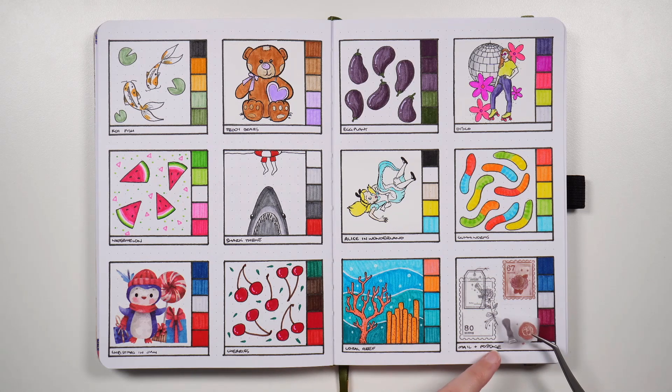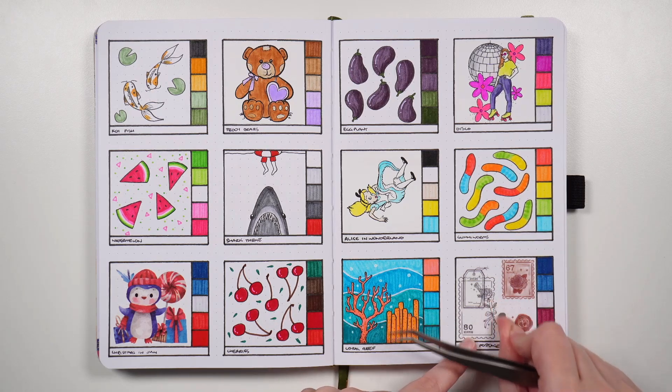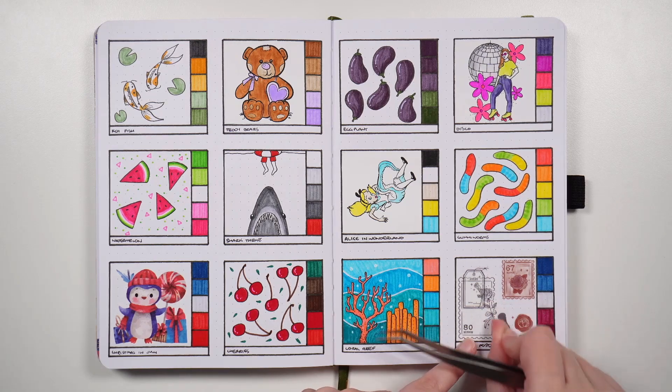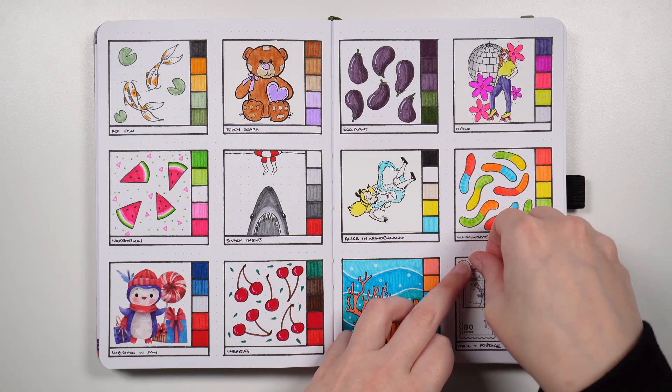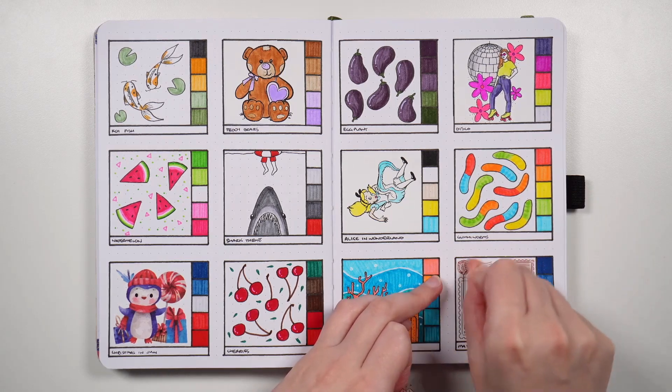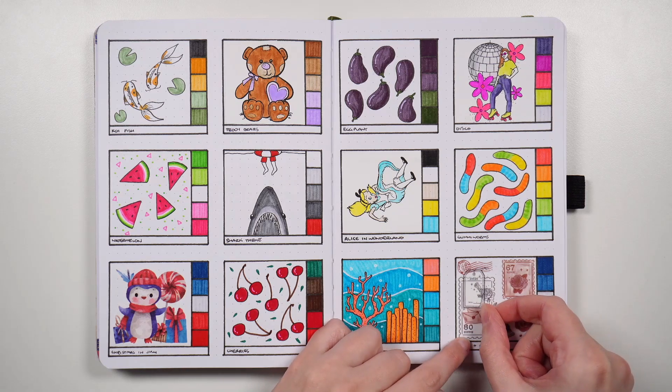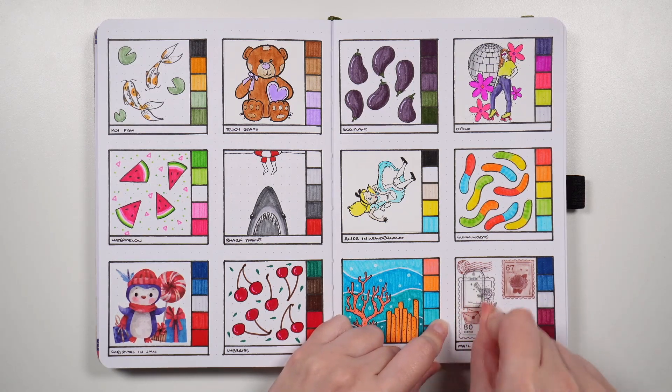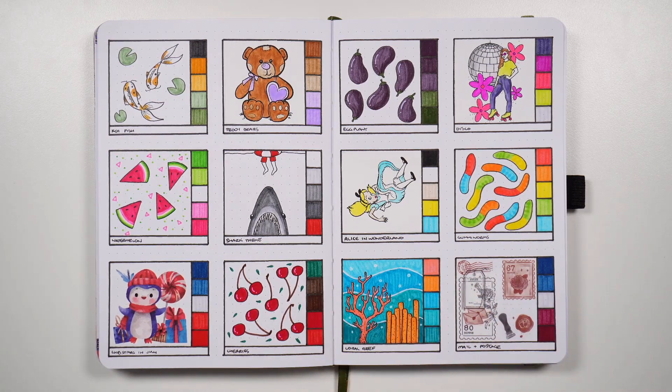For the decoration in this one, I'm just using some washi tape that has different postal elements, so stamps, wax seals, that kind of stuff. But I have also previously done a love letters style theme in my bullet journal. That one was a lot of fun. The colour palette was a little bit more subdued. It was kind of a paler blue and pink rather than red. But as said, parcels and envelopes are quite easy to draw, so it makes for a really good theme if you don't consider yourself to be much of an artist.